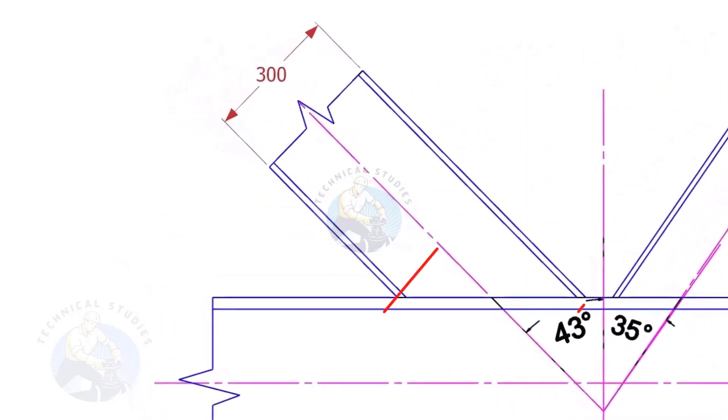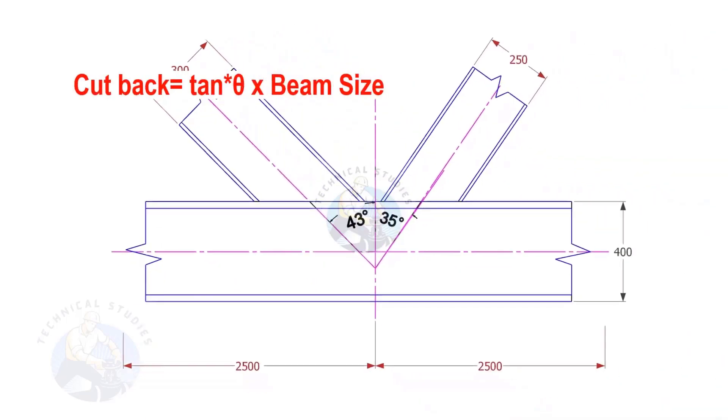Let us calculate the cutback of this beam. The formula to calculate the cutback is tan degree multiplied by the size of the beam.